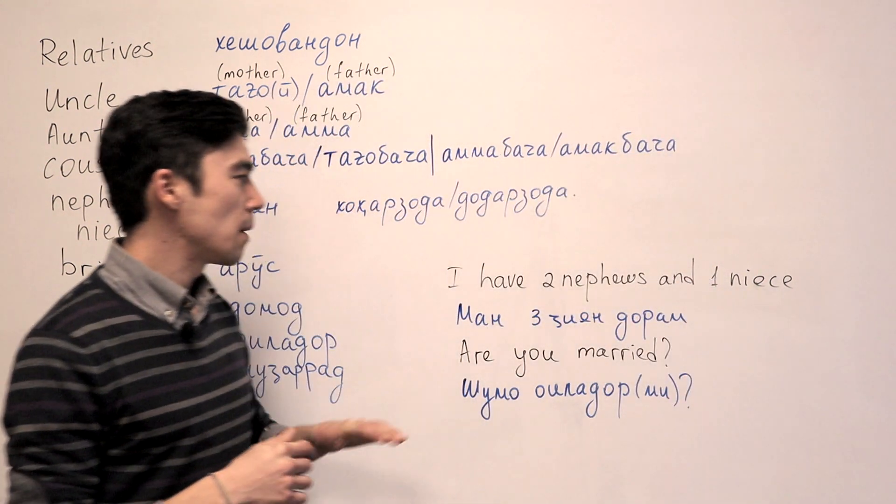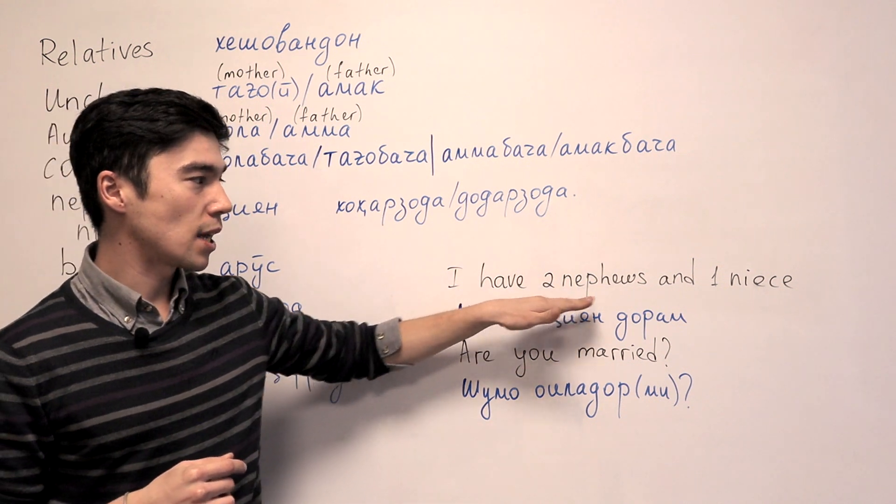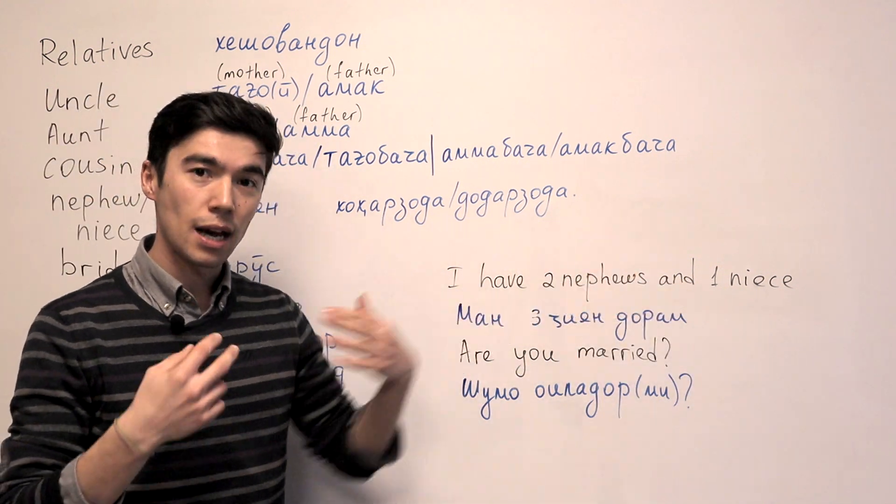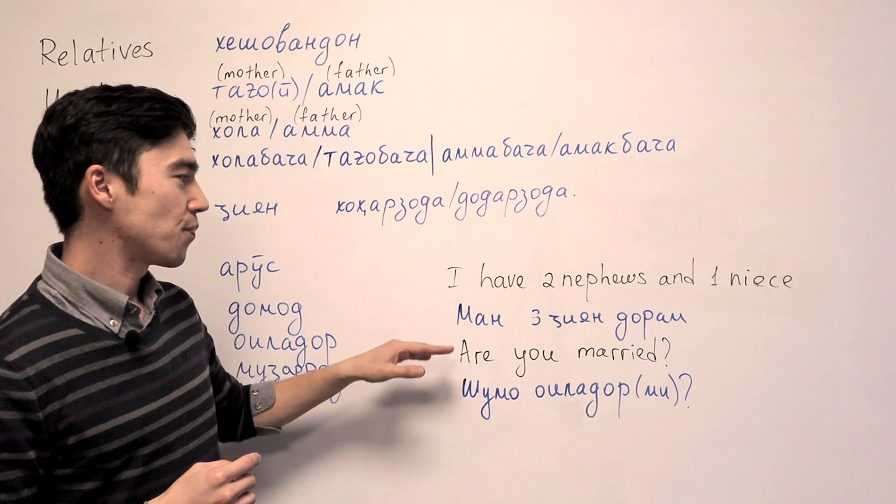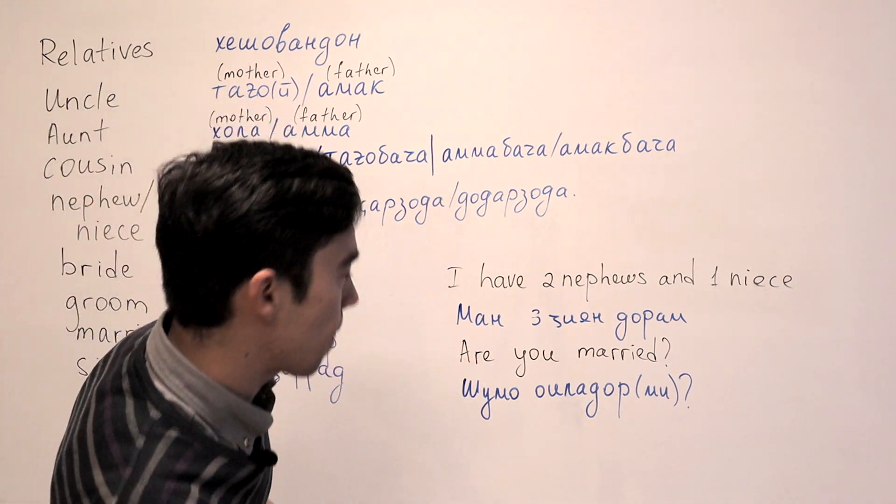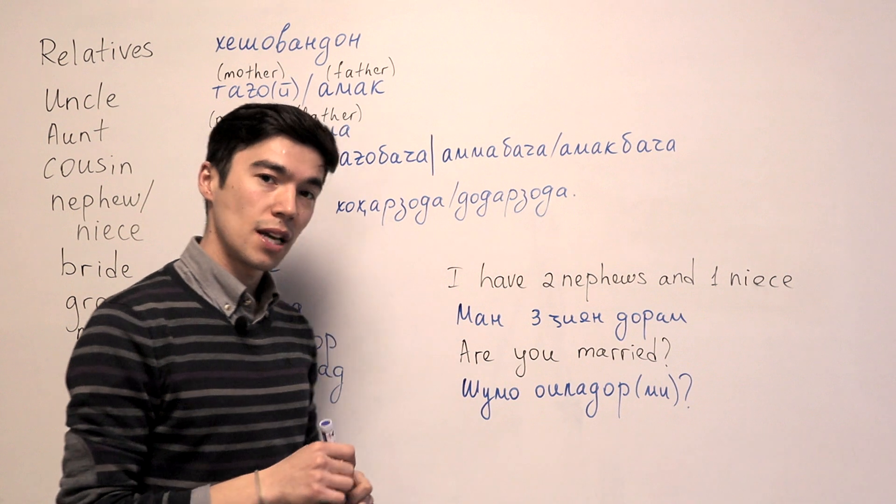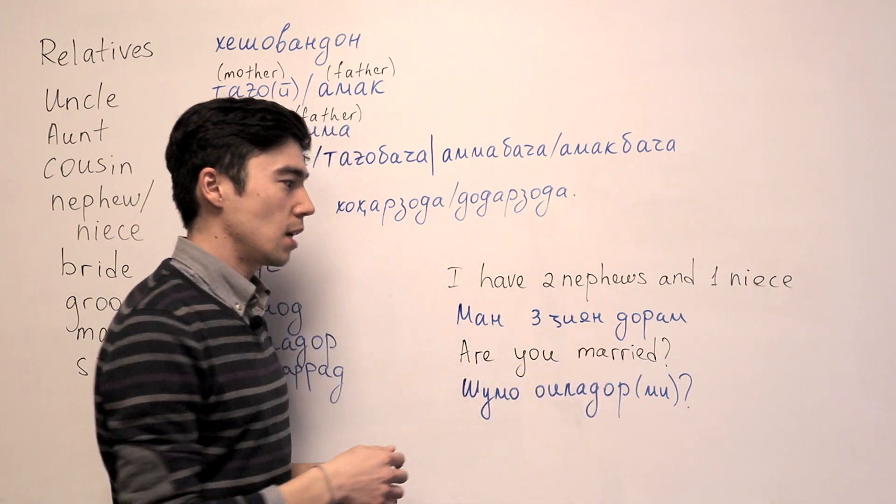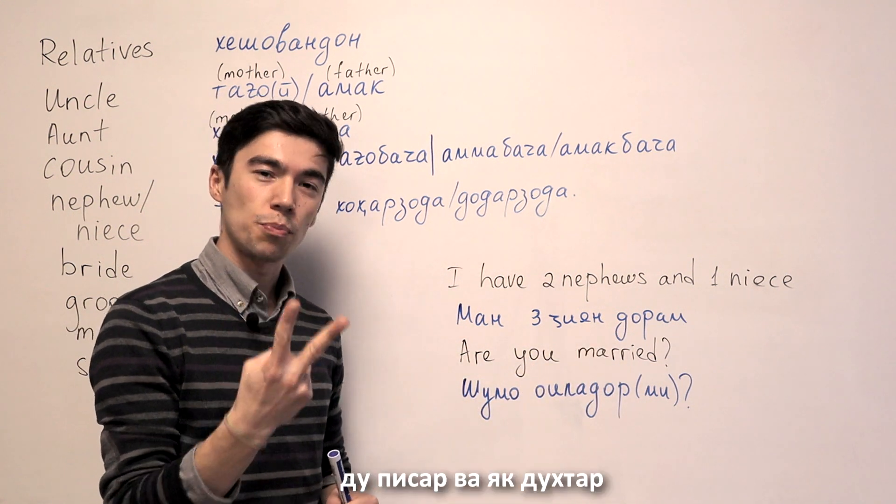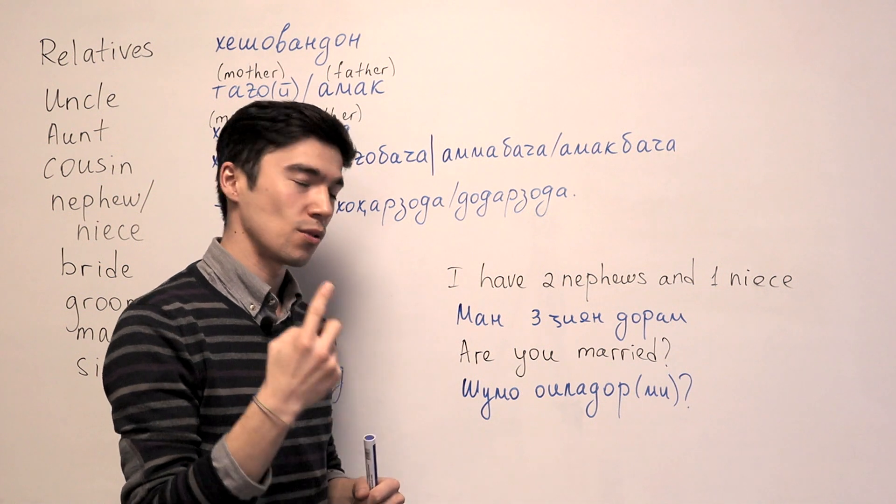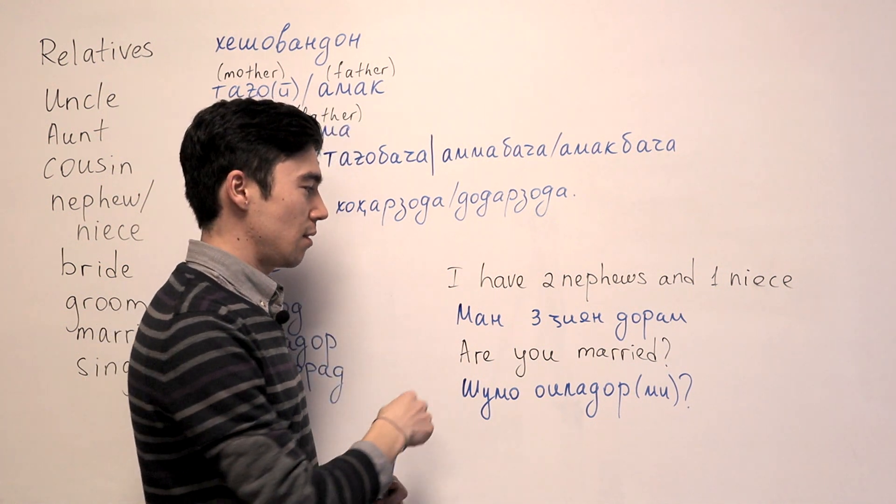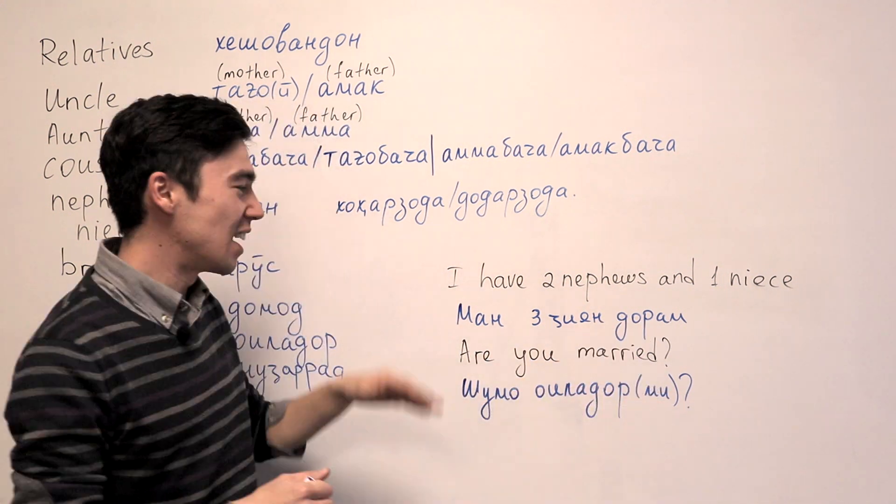So here are some examples. I have two nephews and one niece. I really have two nephews and one niece. So Man Se. You can say Man Se Jihan Doram. So two boys and one girl. Man Se Jihan Doram.